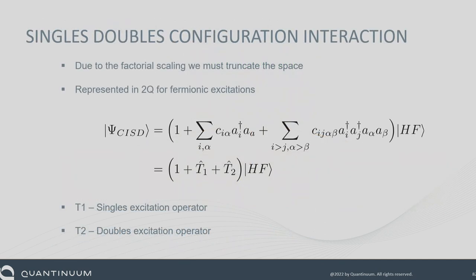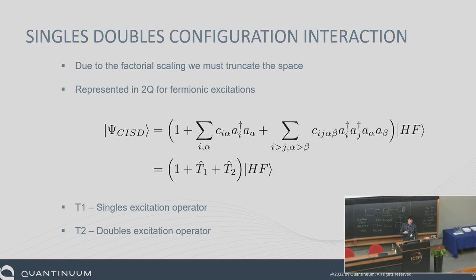Let's start talking about some quantum computing stuff. Because the matrix scales combinatorially, we have to truncate it for real problems. We can form our basis using the second quantized representation. We can form the excitations by starting from the Hartree-Fock state, which is the 1, 1, 1, 0, 0, 0 state. We can then form an excited state by destroying one of the virtuals and creating one of the occupied orbitals — that's the C†_a C_i operator, where A is the occupied and I is the virtual. This is called an excitation operator. We call these T's the excitation operators — we've got single and double excitations.